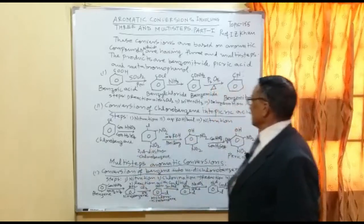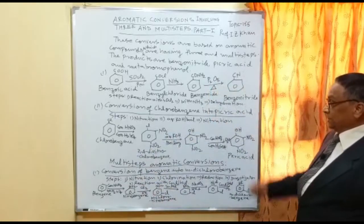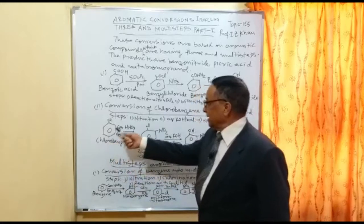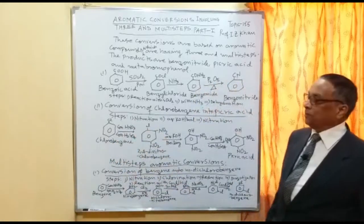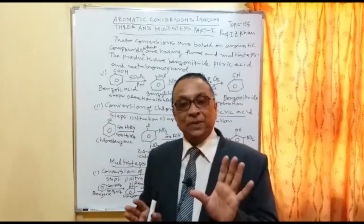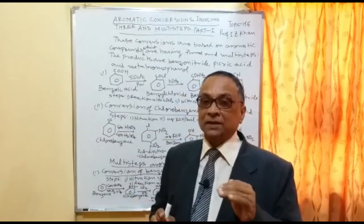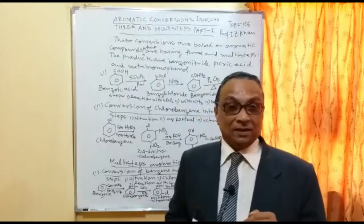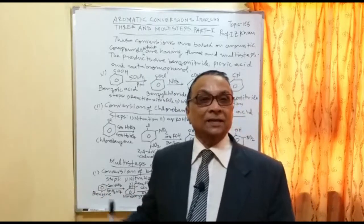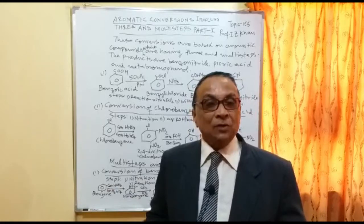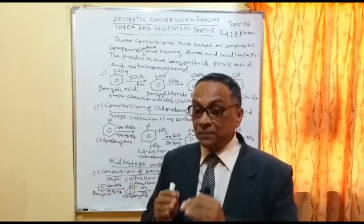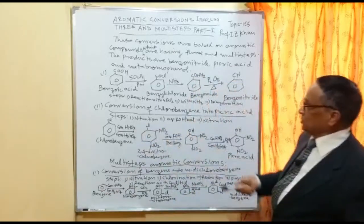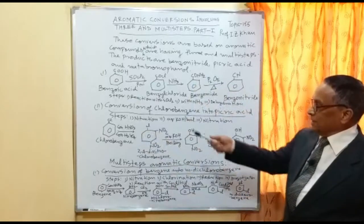Conversion number two is the conversion of chlorobenzene into picric acid, which is important from an examination point of view — sometimes they ask how you will obtain picric acid. There are three steps involved. It is good for students to remember the steps, reagents, and catalysts, because questions are asked where the reactant and product are given and you must state how many steps and what reagents are involved.